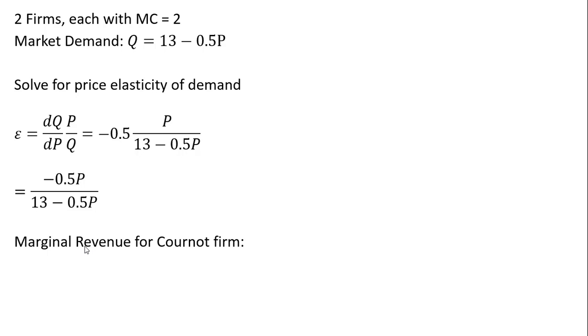The important part of this solution is to recognize that the marginal revenue for a Cournot firm is given by the following equation. You may have seen something like this before for a monopoly. The big difference here is we have this N in front of the price elasticity of demand, where N represents the number of firms. In our example, N is going to be 2.